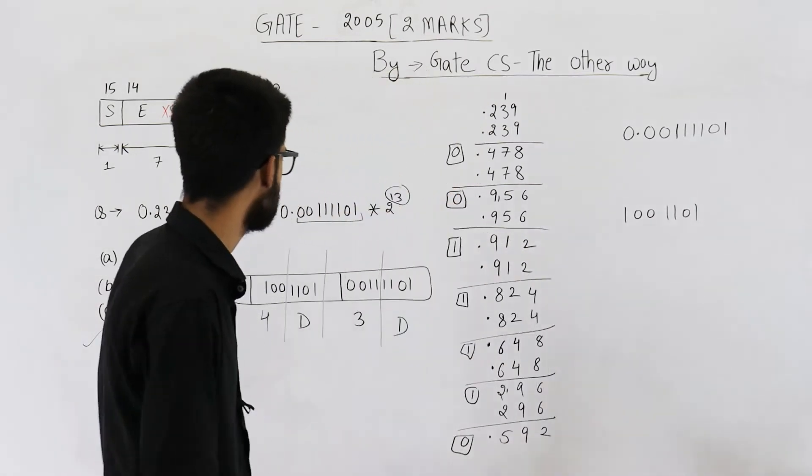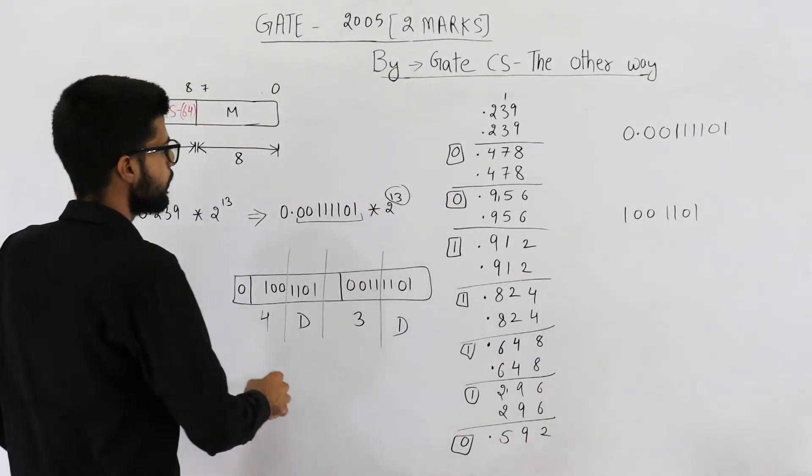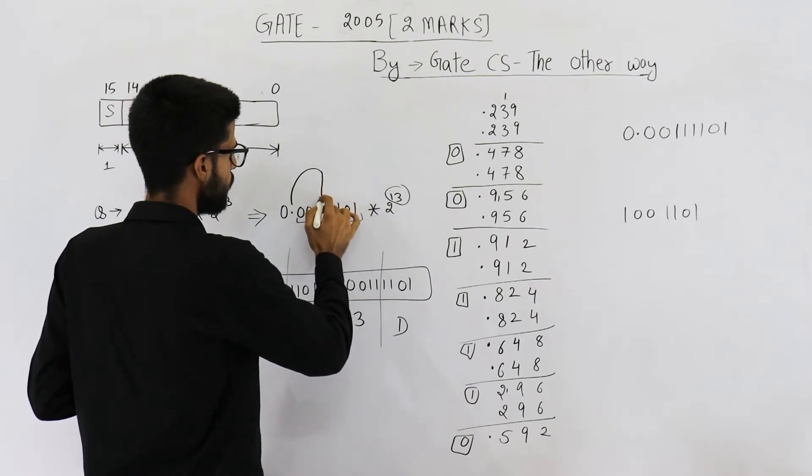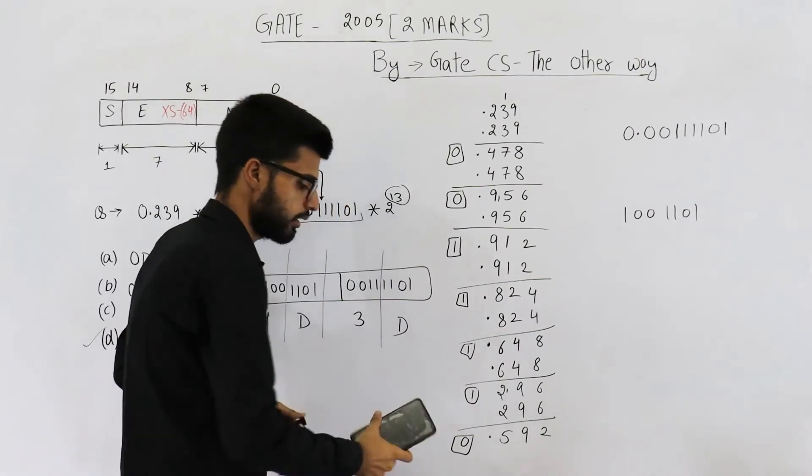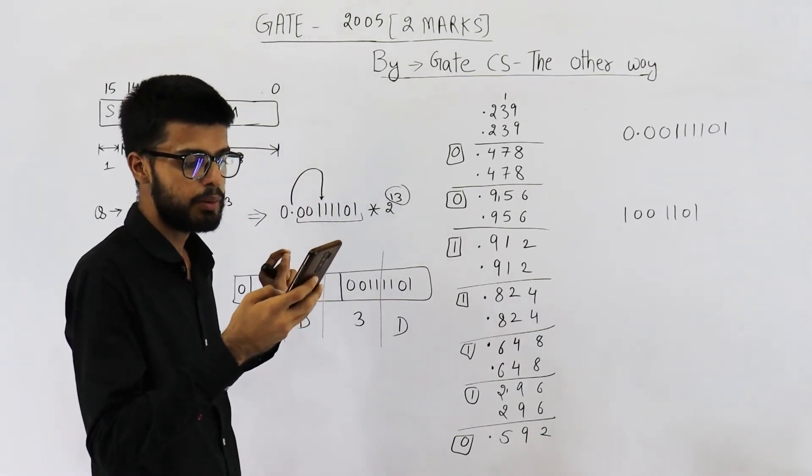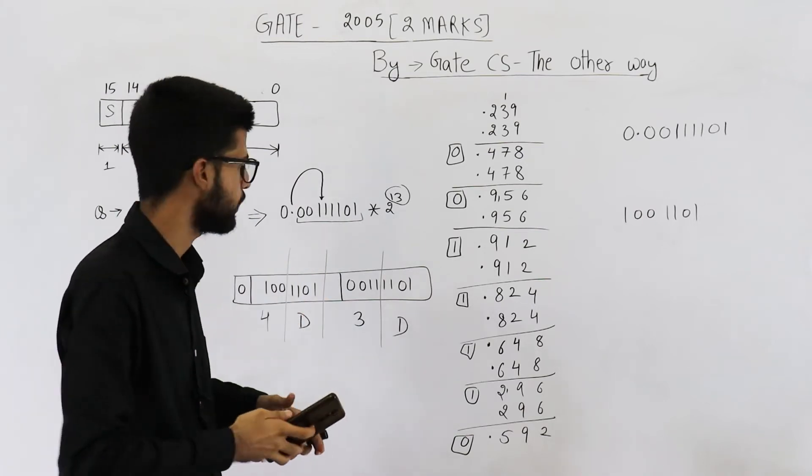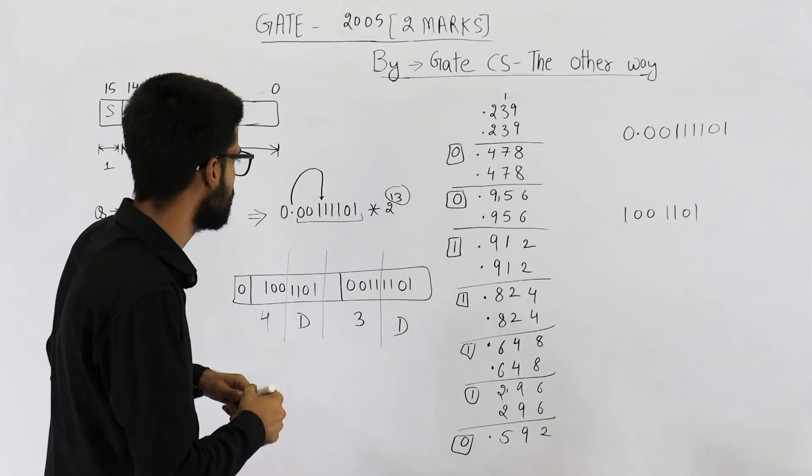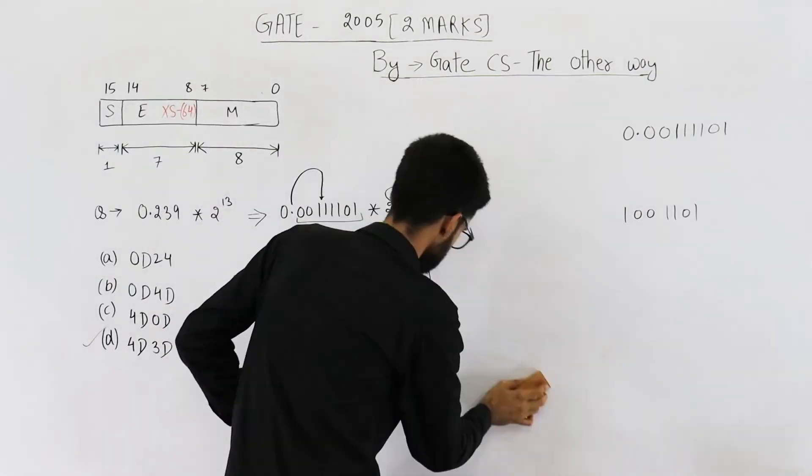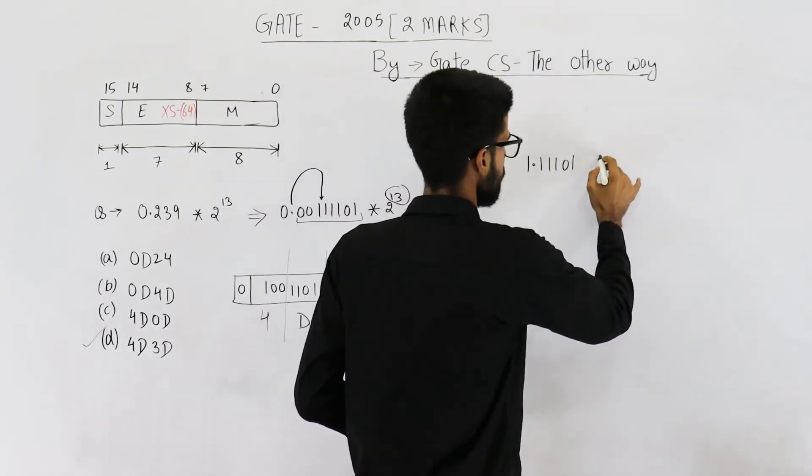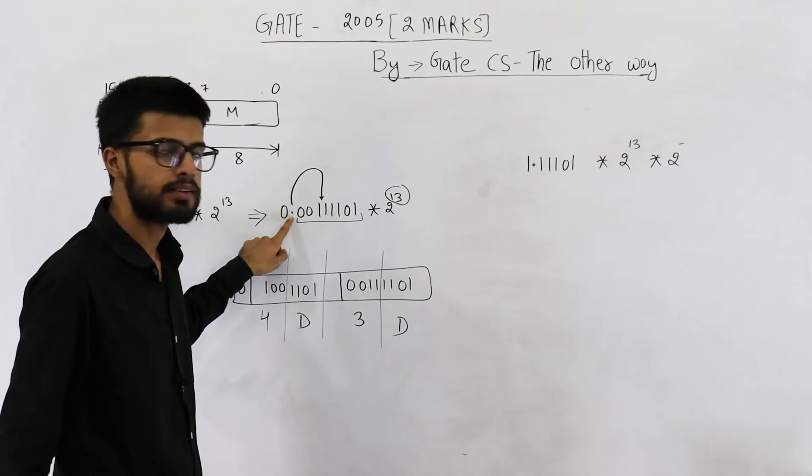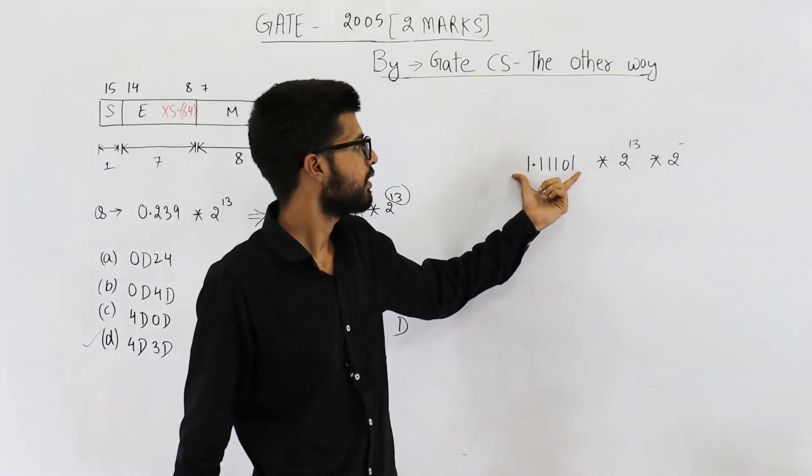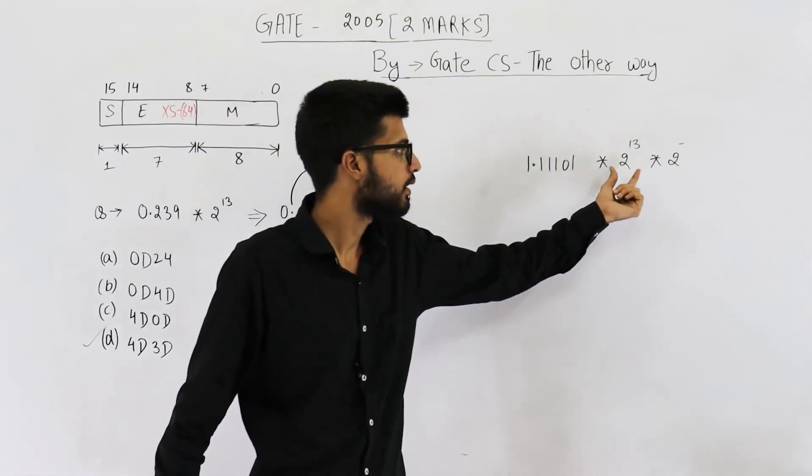So let us solve this question also. Now we need to normalize this number. See, when we normalize it, this radix point will be shifted here. It will be shifted after the first one. It is mentioned in the question. Let me read that line once again. The mantissa has an implicit one preceding the binary radix point. That means this is that one. This is implicit. We need not save this one in mantissa. So the new number that we are going to get, 1.11101.